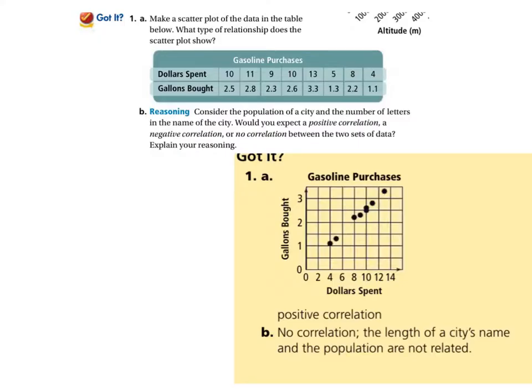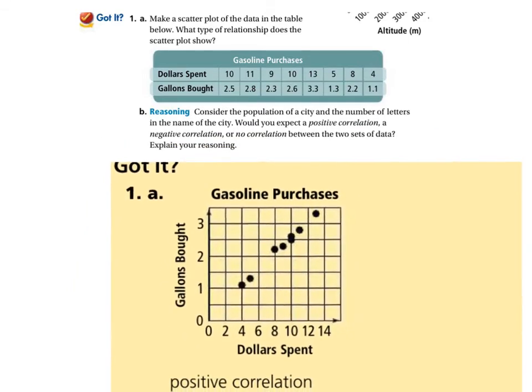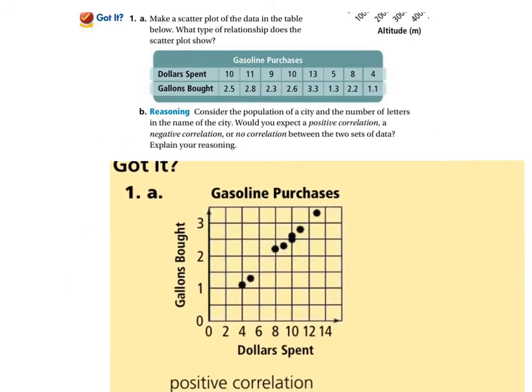On this one, you're asked to make a scatter plot and talk about what it shows. So I've got that example here for us. So again, you had to plug and chug rather here, or rather just graph. So we start here with $10 dollars spent and 2.5. $11, 2.8. $9, 2.3.